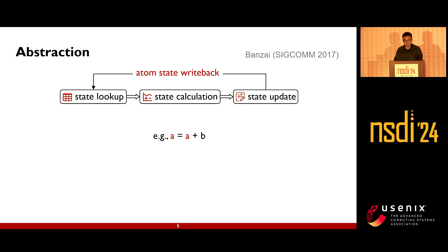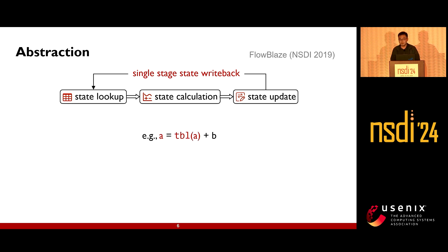This involves fetching value A, executing a straightforward calculation, and subsequently updating A. FlowBlaze enables state writeback within a single-stage processor, involving initially reading the state, followed by a table lookup and computation to derive a new state, and ultimately updating the state.